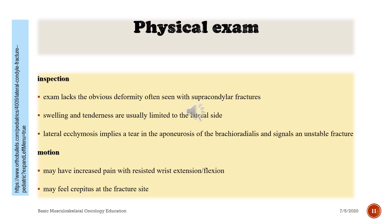Physical Examination — Inspection: exam lacks the obvious deformity often seen with supracondylar fractures. Swelling and tenderness are usually limited to the lateral side. Lateral ecchymosis implies a tear in the aponeurosis of the brachioradialis and signals an unstable fracture. Motion: may have increased pain with resisted wrist extension or flexion; may feel crepitus at the fracture site.